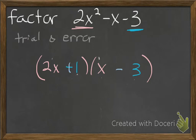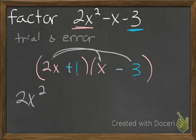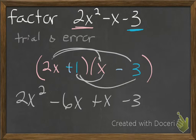So then in that case, when we did 2x times x, you still have the 2x squared. 2x times negative 3 is a negative 6x. 1 times x is a positive x. And then a negative 3. Now in this case, we ended up with a negative 5x as the middle term.